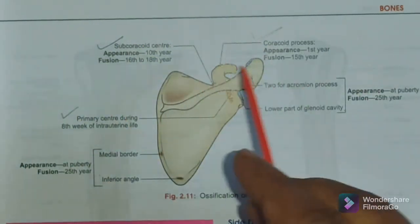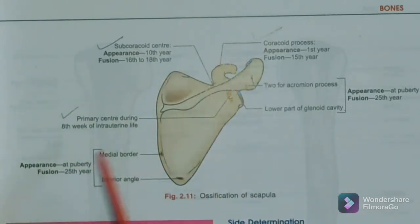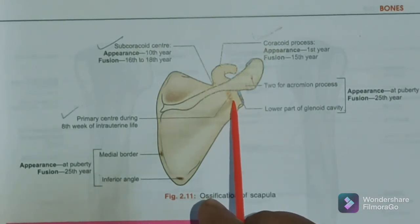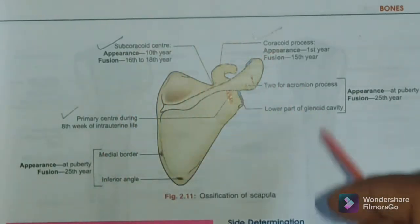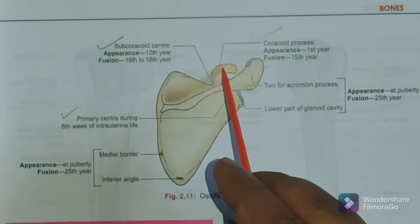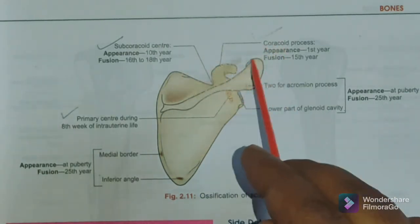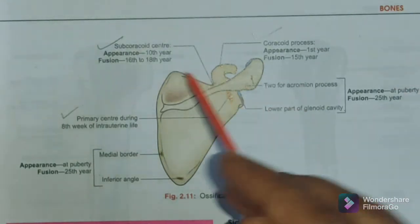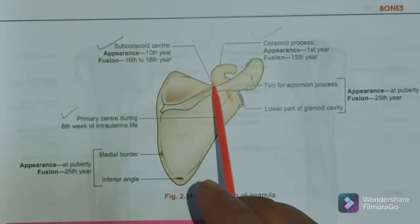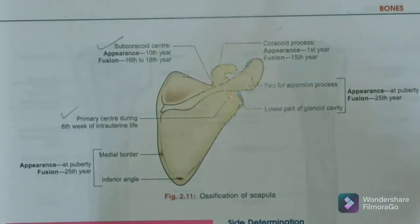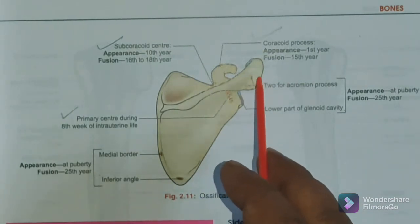I will now show you a diagram of the ossification centers so you get a visual picture. In this diagram, you can see the one primary center near the glenoid cavity, appearing during the eighth week of intrauterine life. There are seven secondary centers in total. One center is in the horizontal part of the coracoid process, appearing in the first year and fusing by the 15th year. The subcoracoid center is near the suprascapular notch, appearing during the 10th year and fusing by the 16th to 18th year.